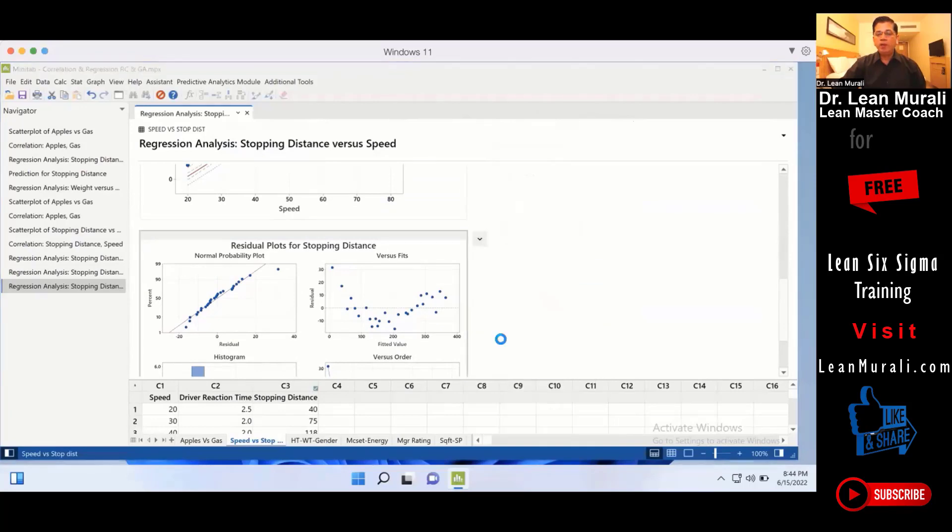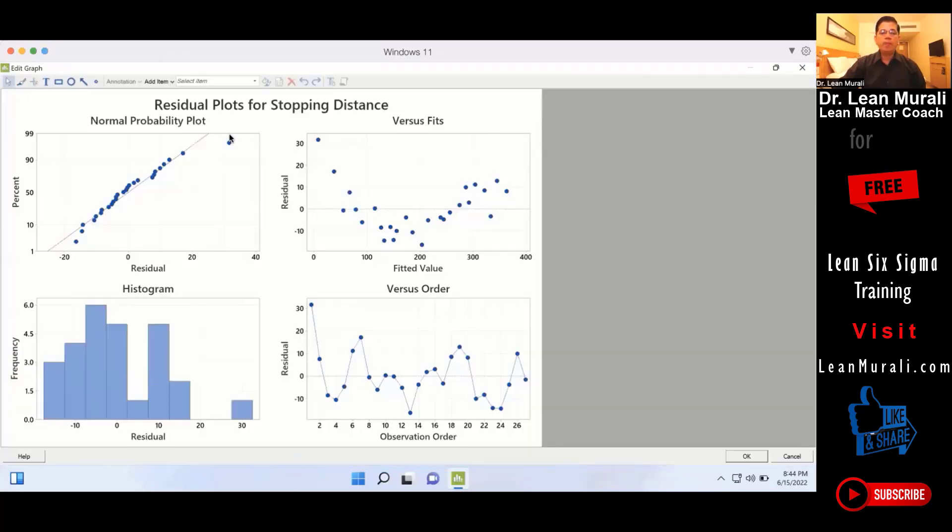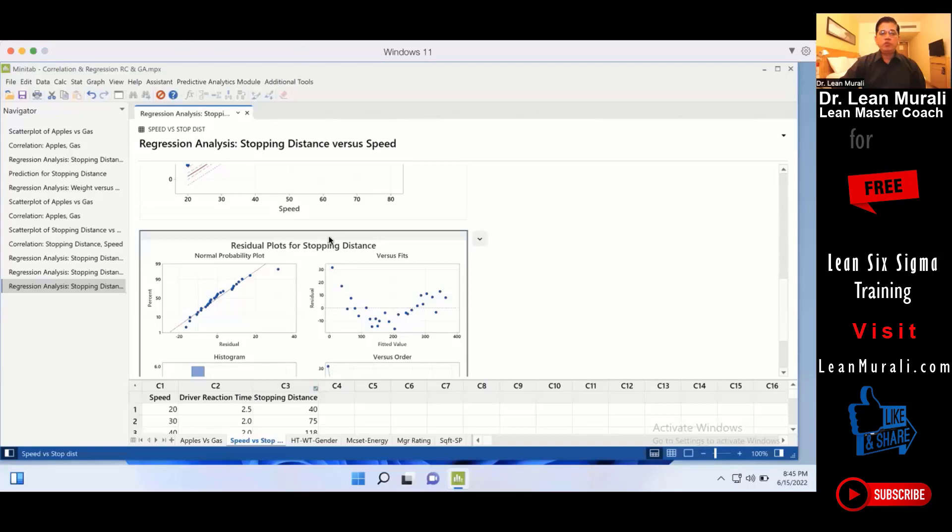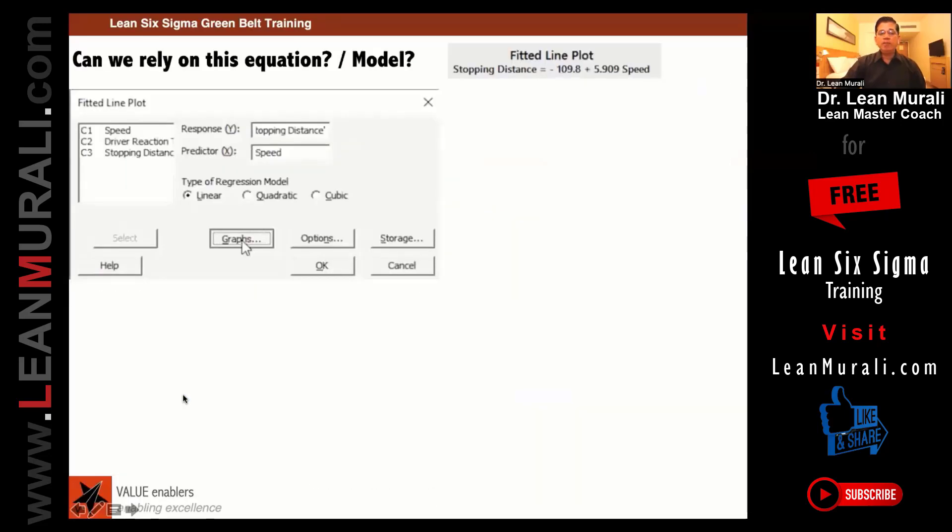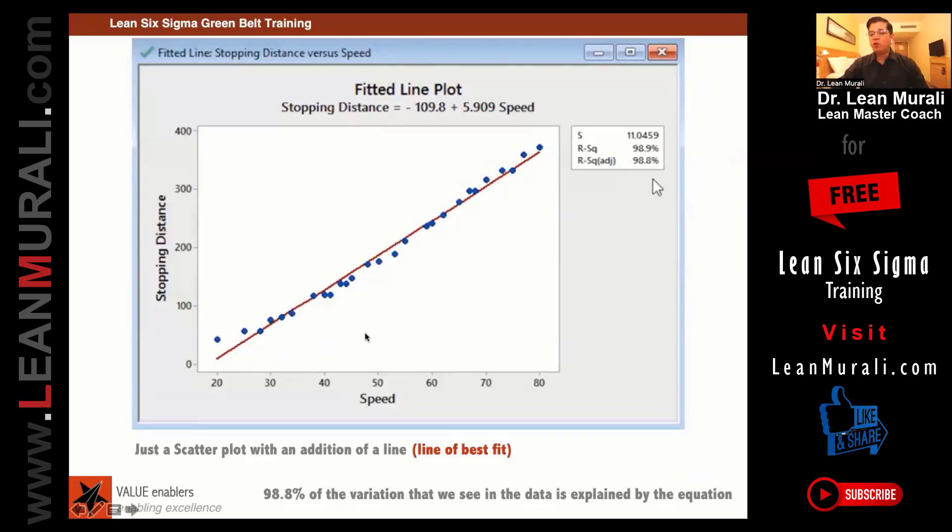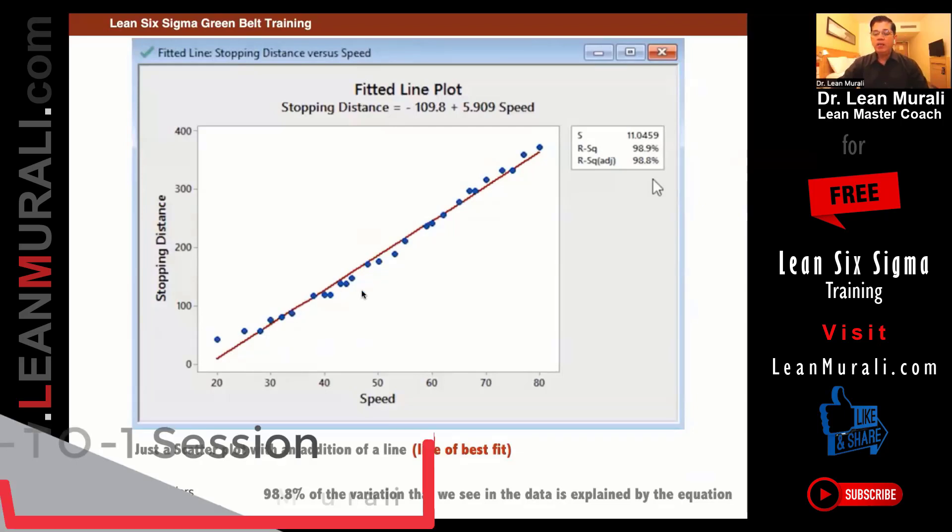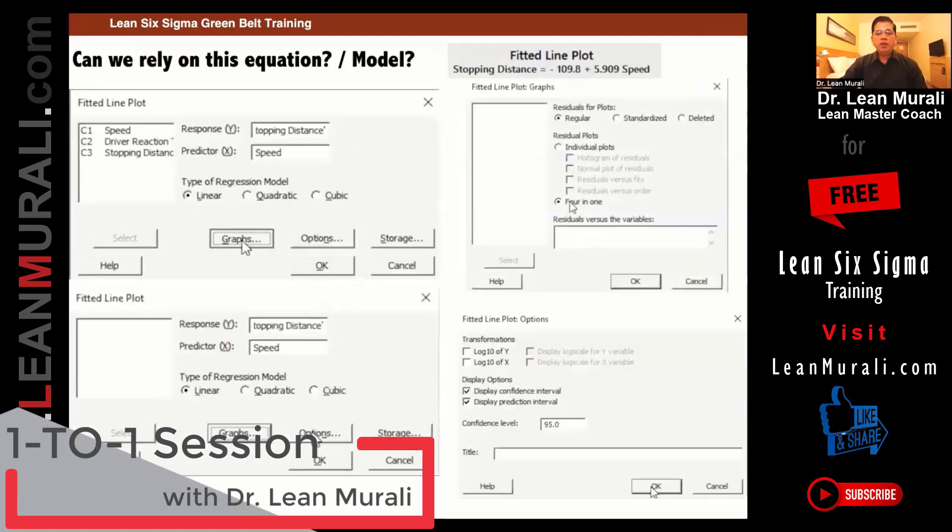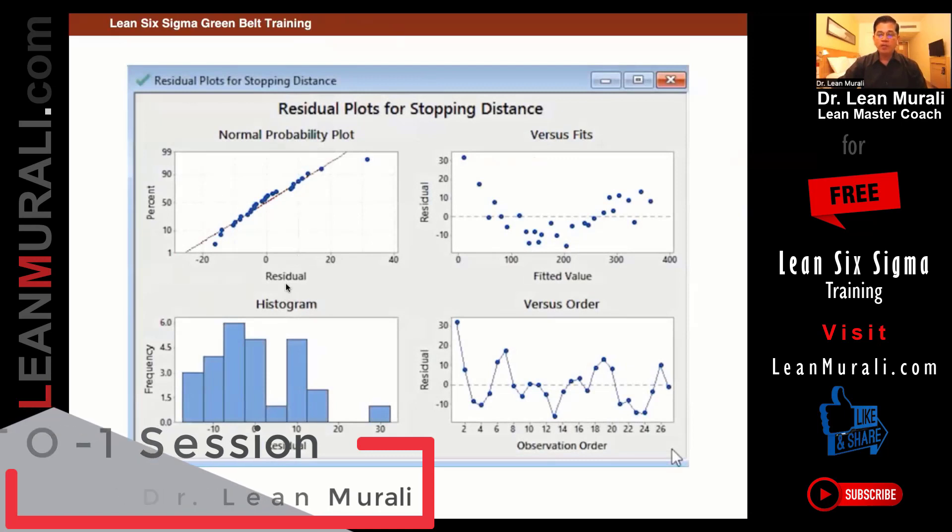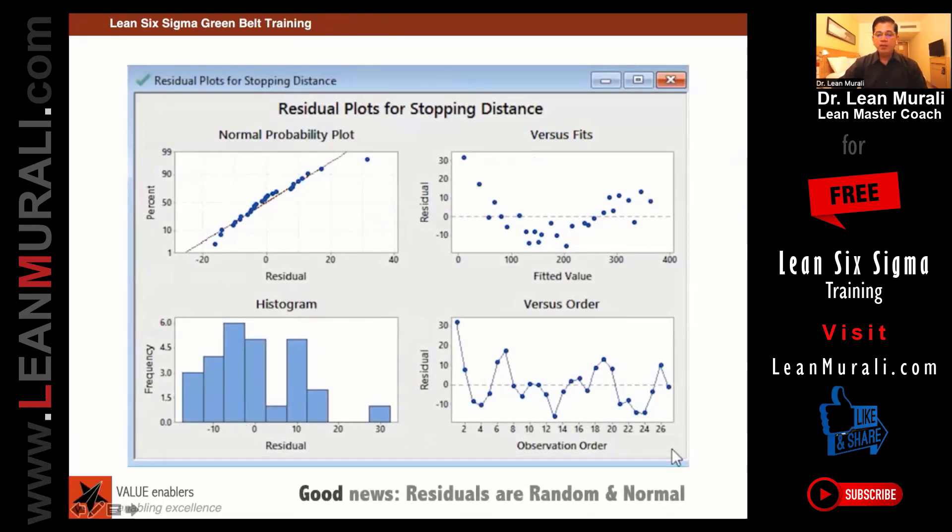In the 4 in 1 plot, if I explode this and show it to you, there is this residual plot that is there. I will explain to you what is the residual. If I can switch over to PowerPoint. The residual is nothing but the distance between the line and each of these dots is called residuals. All you have to remember is in this, this residual should show as normal for this equation to be valid. So the residuals are random and normal.